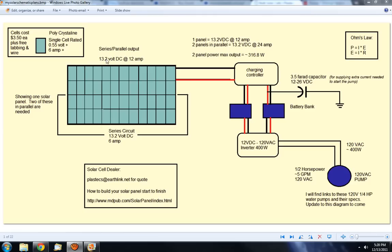Two of these wired in parallel will give me 13.2 volt DC at 12 amps. I'm using Ohm's law for all this, as you see right here. If I have two of these panels in parallel, I still have 13.2 volt DC and now I'm up to 24 amps.